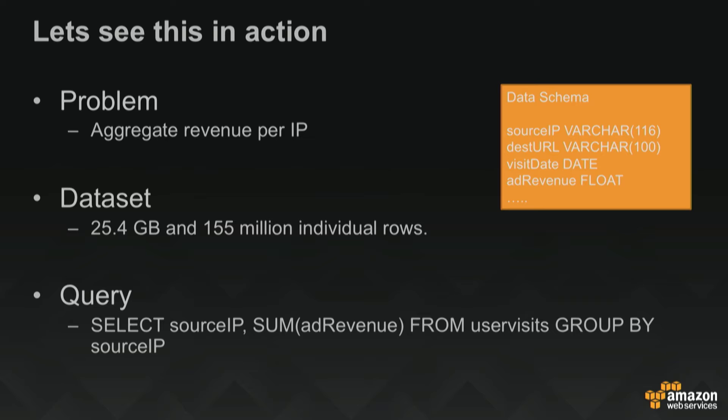Let's take an example. This is a benchmark query taken from Amplab, which has benchmarks on various different big data processing. There's a data schema here, which is essentially a CSV file that has source IP, destination URL, and ad revenue, plus a bunch of other fields. We're only interested in aggregating the revenue per IP for this dataset. The dataset essentially has 25 gigs of data and 155 million individual rows. So the SQL query looks something like this.